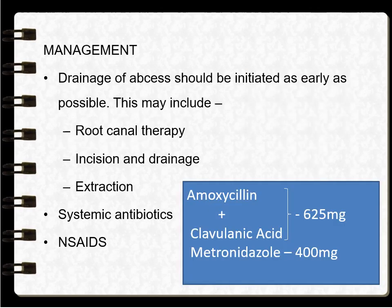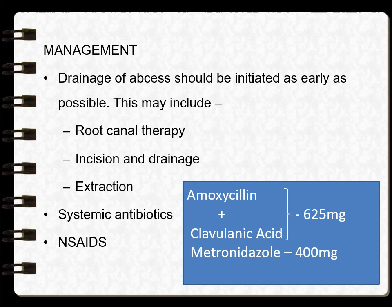Management includes drainage of the abscess, which should be initiated as early as possible. This may include root canal therapy, incision and drainage of the abscess, or extraction in cases where the tooth cannot be saved or the abscess is very large and cannot be treated conservatively. Systemic antibiotics include amoxicillin and clavulanic acid 625 mg twice daily for 5 days and metronidazole 400 mg thrice daily for 5 days.